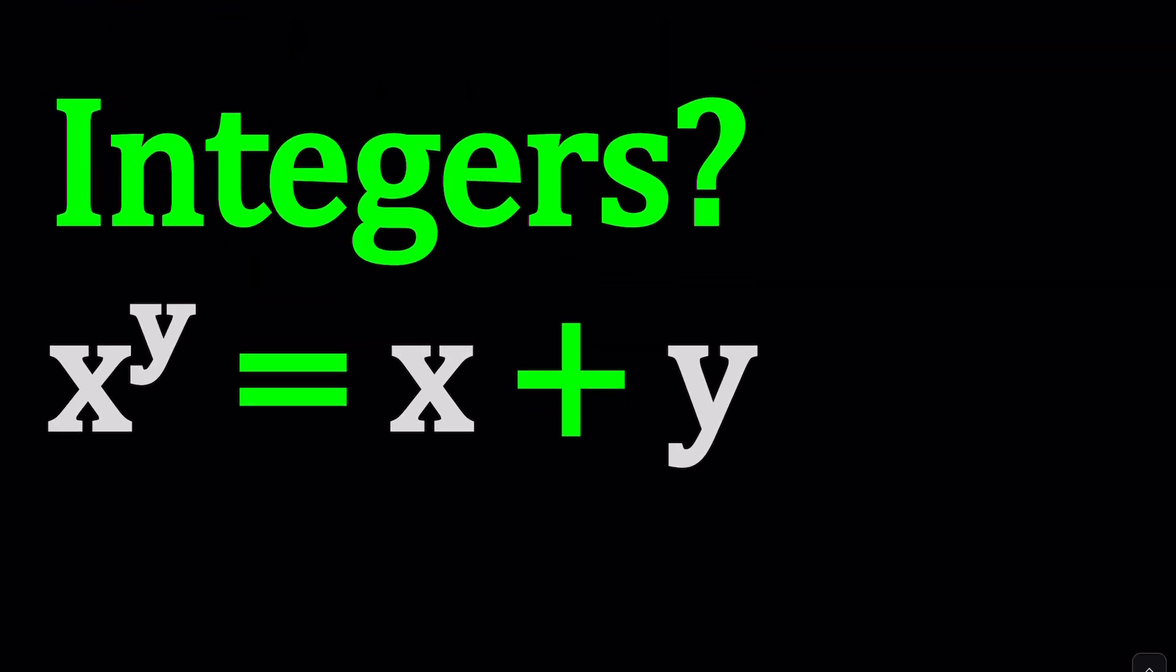To be able to solve x to the power y equals x plus y, where x and y are integers, we need to consider a lot of things. We can start with some specific values, and those trivial values will give us an idea, but that's not the whole picture. When you look at the graph, it'll make more sense. Whenever you see a Diophantine equation, test some values like x equals 1, x equals 0, y equals 0. You can even replace y with x, replace y with negative x, and see if you can arrive at something interesting.